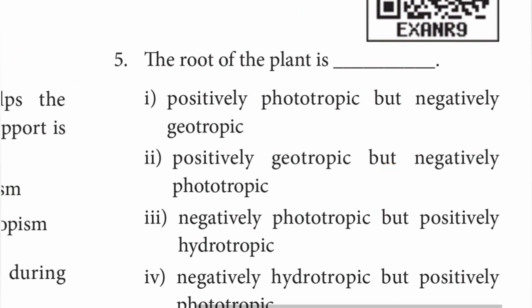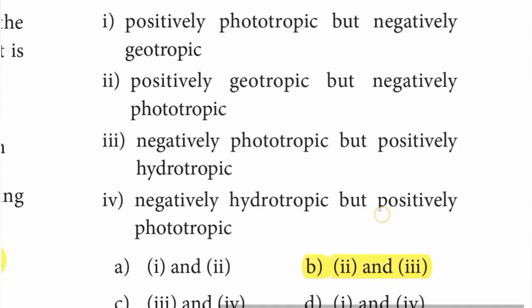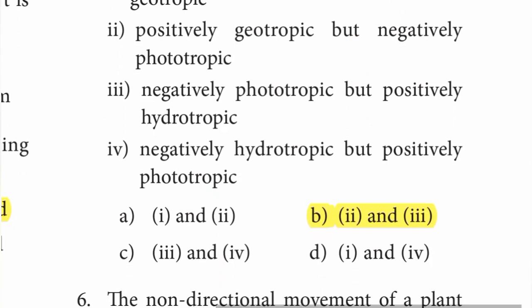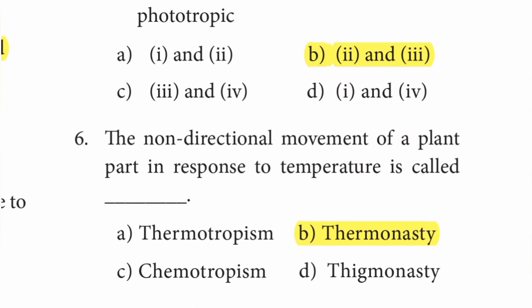Number five: the root of the plant is positively geotropic. Option C is the right answer - second and third. The third answer is option B. Sixth one: the non-directional movement of a plant part in response to temperature is called thermonasty. Answer is option B.